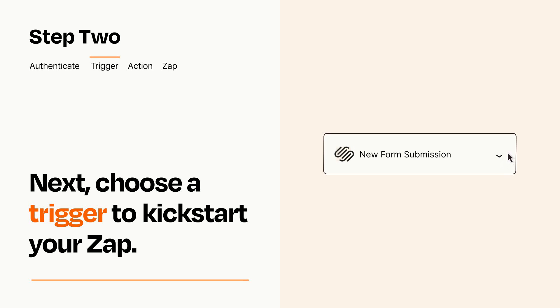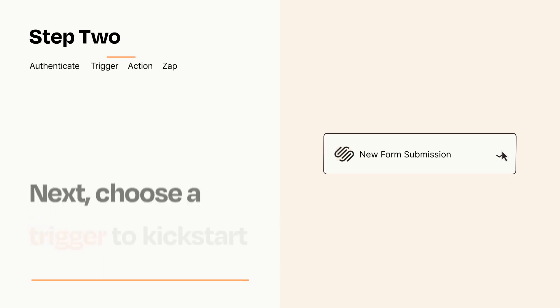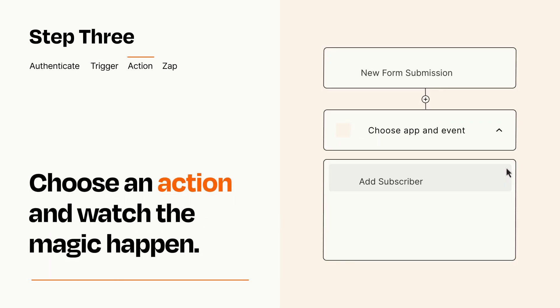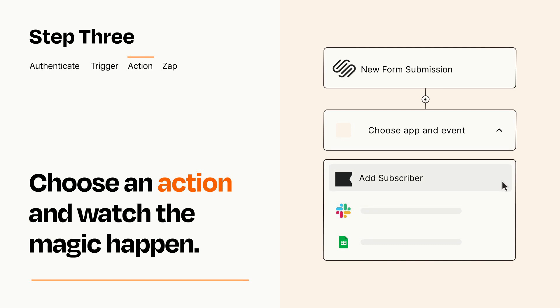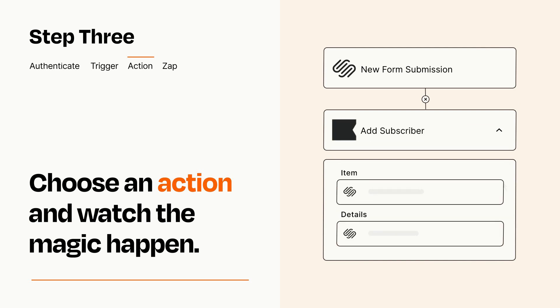This last part is where the magic happens. Choose the action you want to happen in your target app. You'll see a bunch of fields where you can specify the details of your Zap. You can type free form text or pull data in from your trigger step as needed.